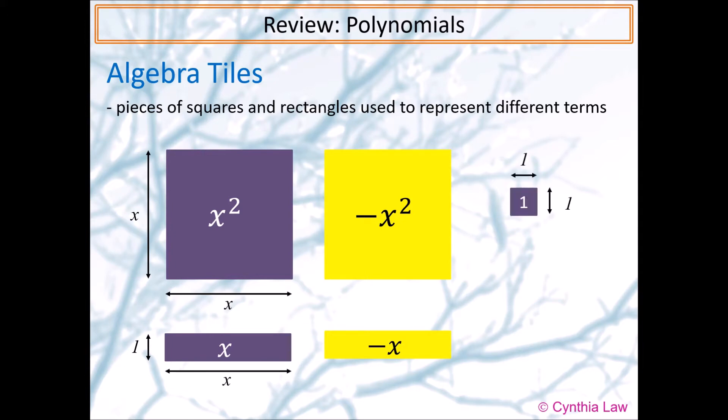Small purple squares have side lengths 1, so their areas are 1 square unit. Small yellow squares represent negative 1.